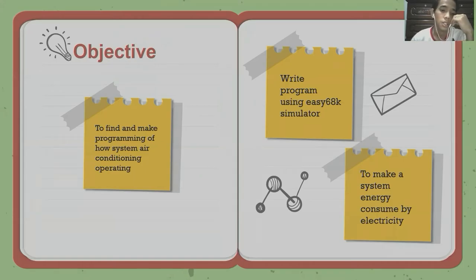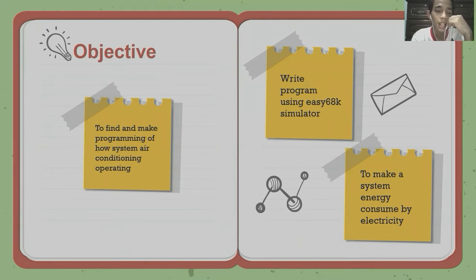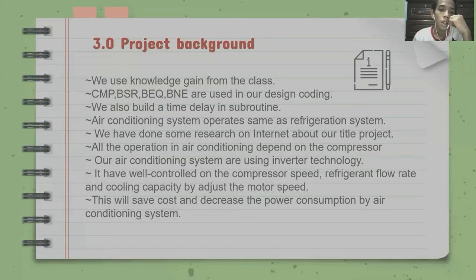These are our objectives. First is to find and make programming of how an air conditioning system operates. Second is to write a program using the Easy68K simulator, and then to make a system that tracks energy consumed by electricity.